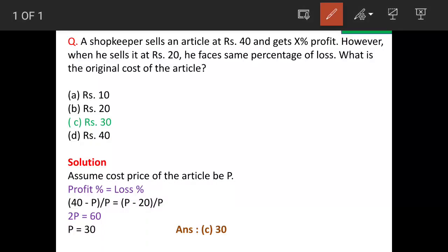A shopkeeper sells an article at rupees 40 and gets X percent profit. However, when he sells the same article at rupees 20, he incurs the same loss, that means X percent loss. So what is the original cost of the item? This is the question and we got four options. Option C is the answer: rupees 30.